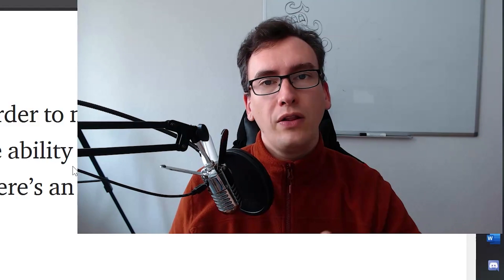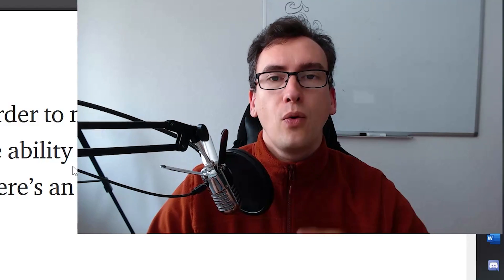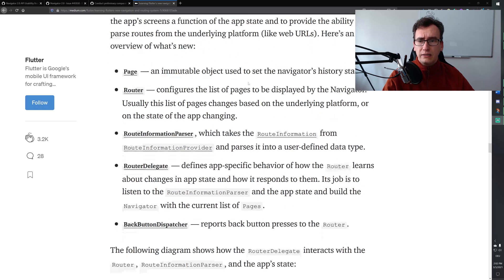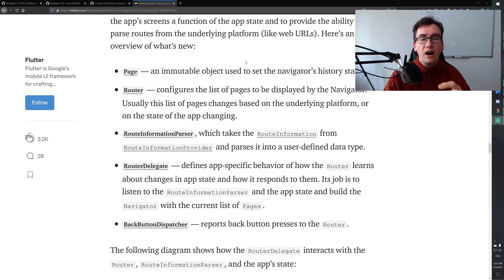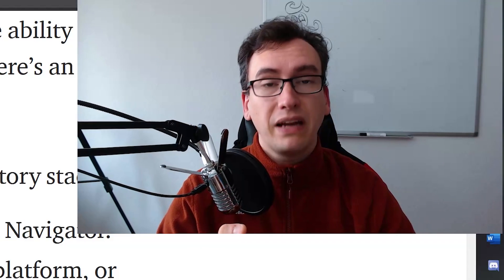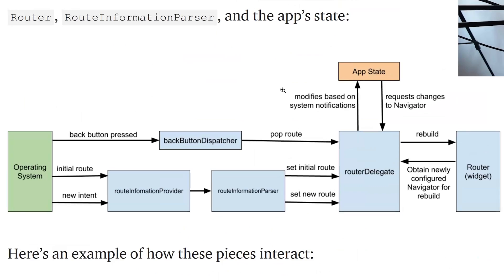But before looking at how the Flutter team is improving Navigator 2.0, let's have a brief catch up on what we need to know to implement it and why it feels so complicated. For Navigator 2.0, we need to know six different APIs: the Page, the Router, Route Information Parser, Route Delegate, and Back Button Dispatcher. If we look at the table showing how they work together and interact, that already looks very difficult, especially compared to the old Navigator 1.0 with just Navigator.push, pop, popUntil, and so on.